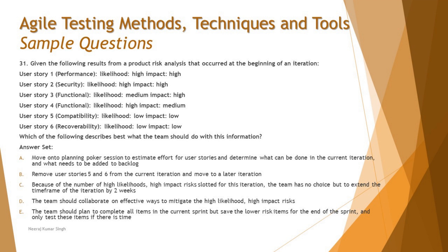Option A makes more sense compared to B — with A you say we'll do the estimation, determine what we can handle in sprint one and move the rest to sprint two. Making a direct statement to blindly remove stories 5 and 6 is not a good recommendation. We don't know at this point how much we can handle in sprint one. We need to do the estimation first and then draw conclusions. Option B can be ruled out.